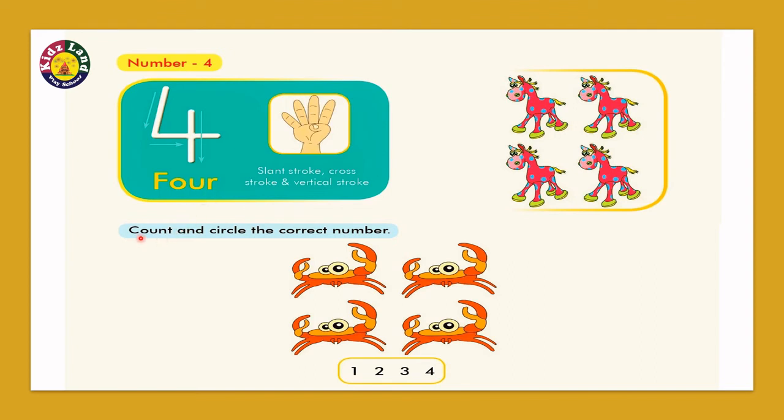What does it say? Count and circle the correct number. Okay, let's first count it. One crab, two crab, three crab, and four crab. How many crabs are there? It is four crabs. Circle the four.